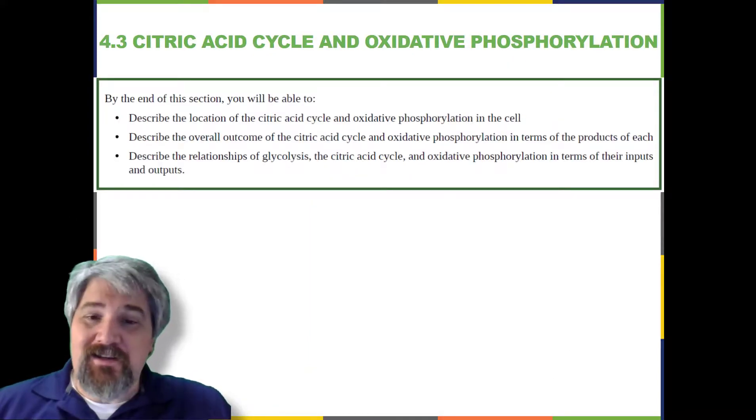By the end of this section, you will be able to describe the location of the citric acid cycle and oxidative phosphorylation in the cell, describe the overall outcome of the citric acid cycle and oxidative phosphorylation in terms of the products of each, describe the relationships of glycolysis, the citric acid cycle, and oxidative phosphorylation in terms of their inputs and outputs.